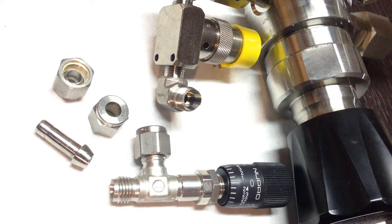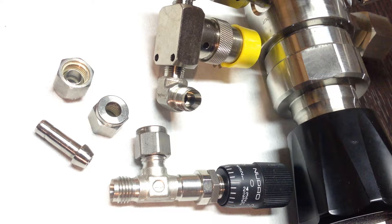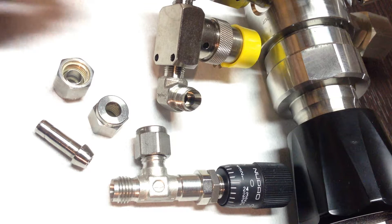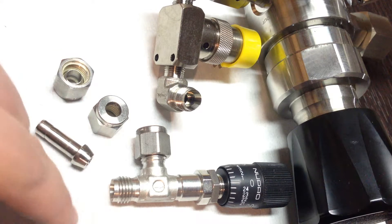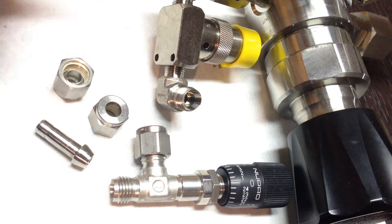This is how you put compression fittings together. I'm going to put this 1/4 inch metering valve onto this elbow here.